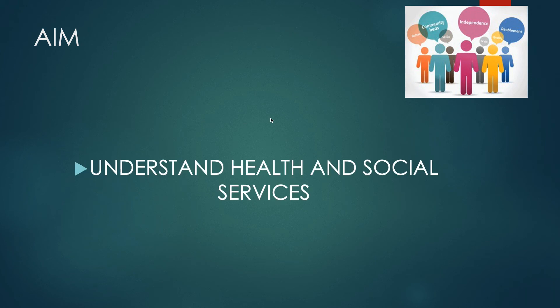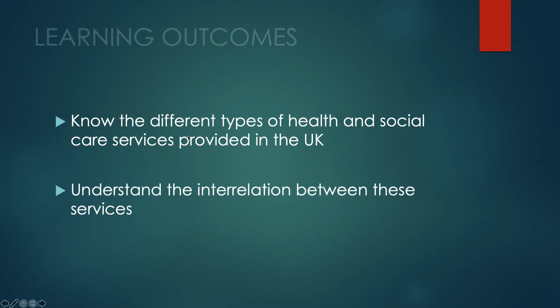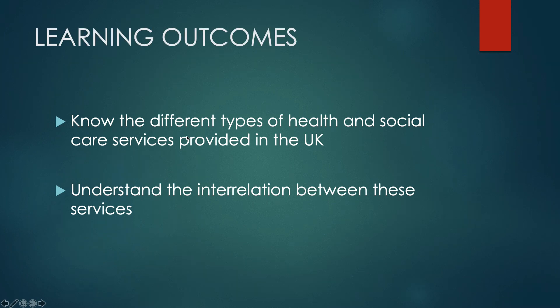We're going to be looking at the different services provided within health and social care in the UK. The aim for today is to understand health and social care services. Our learning outcomes are to know the different types of health and social care services provided in the UK, and to understand the interrelationship that exists between these services.